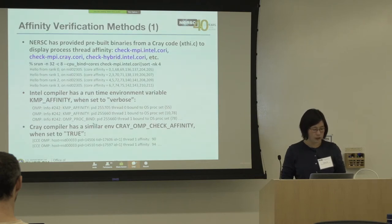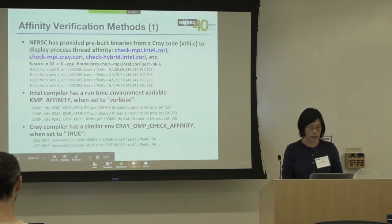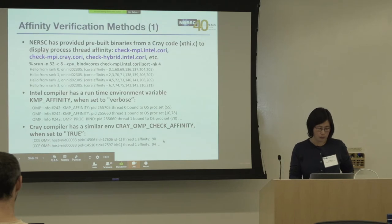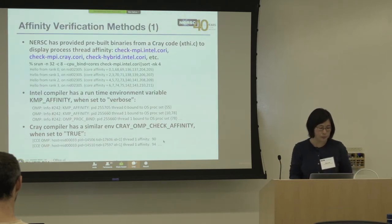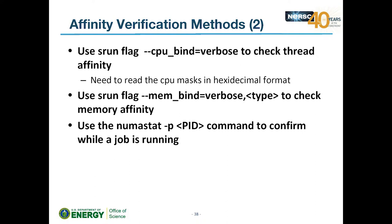There are Intel and Cray compiler-specific settings for OpenMP affinity, though these only give OpenMP thread info, not MPI info. There's also an srun command flag for checking CPU and memory binding affinity.